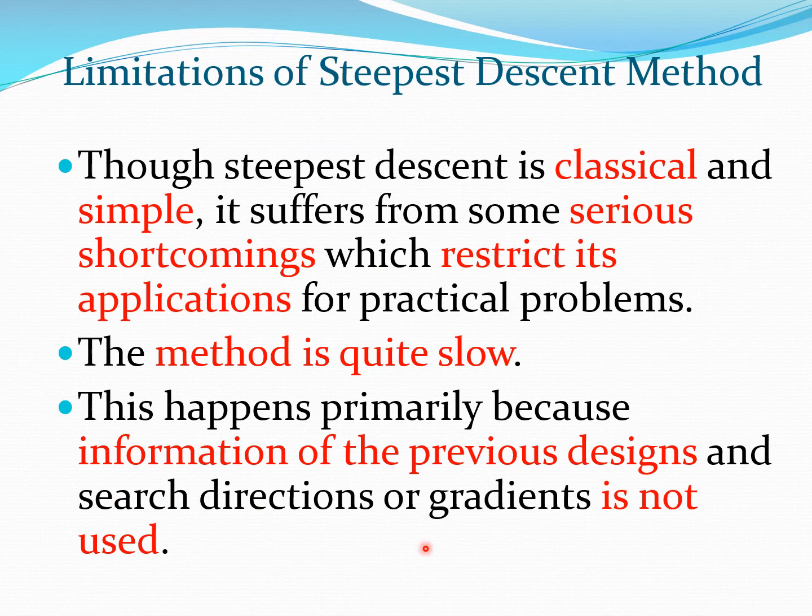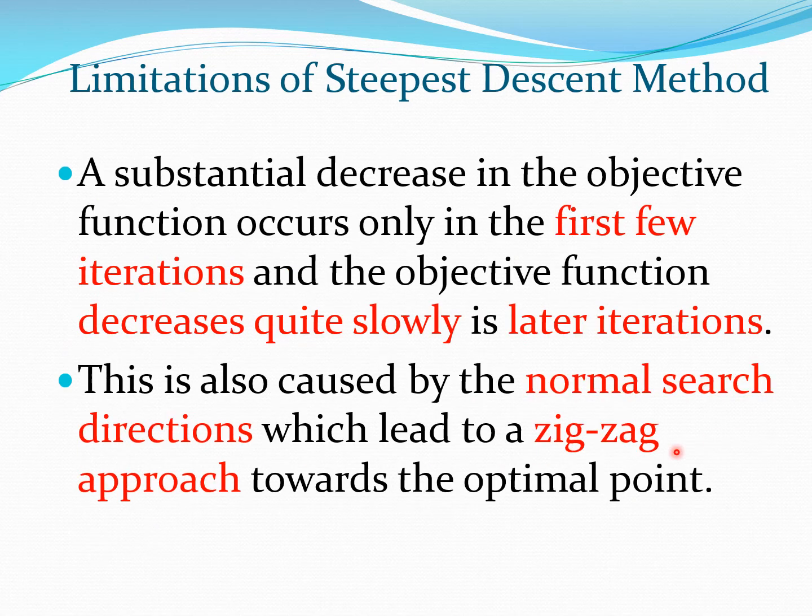Now the steepest descent method is very classical and simple—I think it was invented by Cauchy—but it suffers from some serious shortcomings which essentially creates problems when you apply these to practical problems. One problem is the method is quite slow, and this happens partly because the information of the previous designs and search directions or gradients is not used. You will see here you are only using c of k at the current point; you are not using c^(k-1) and so on. Therefore this method is essentially blind as far as what has happened in the past. So that's one of the reasons why this method is slow.